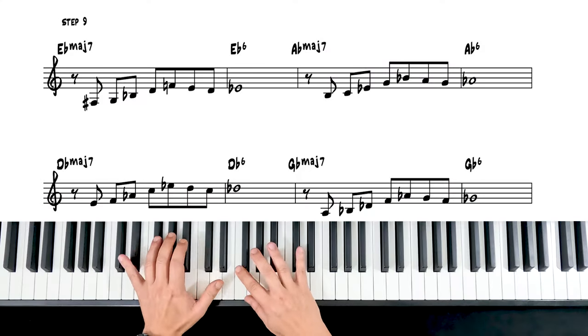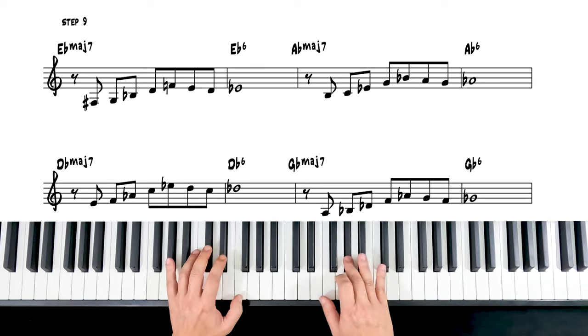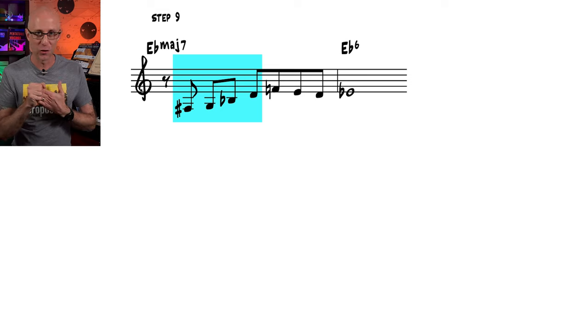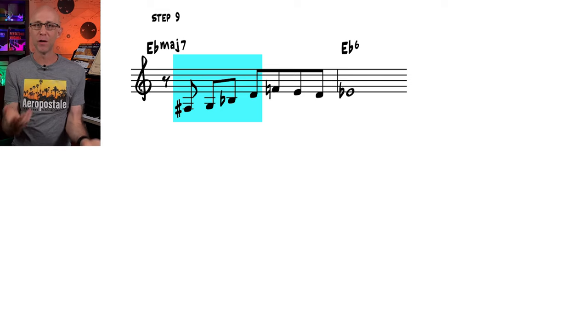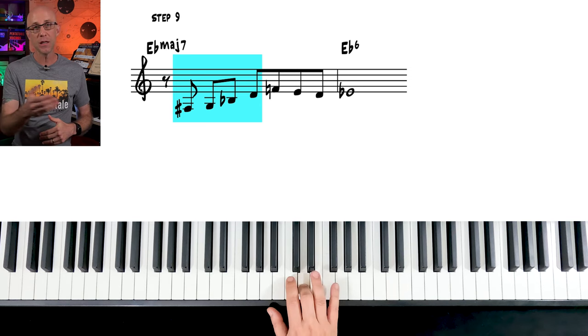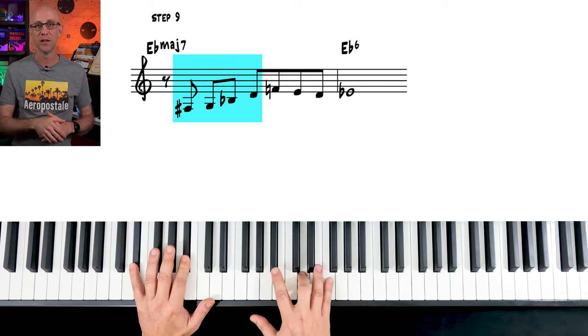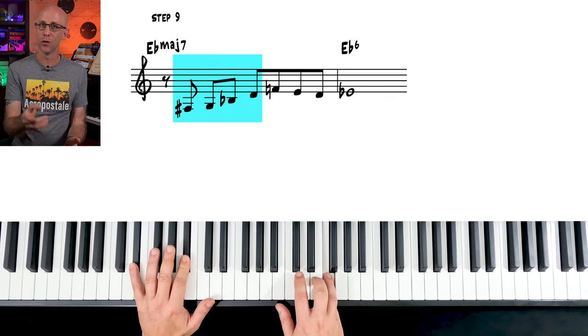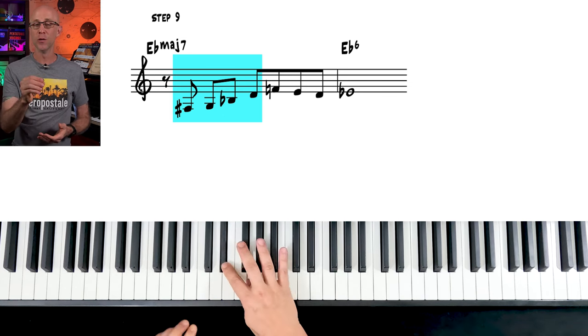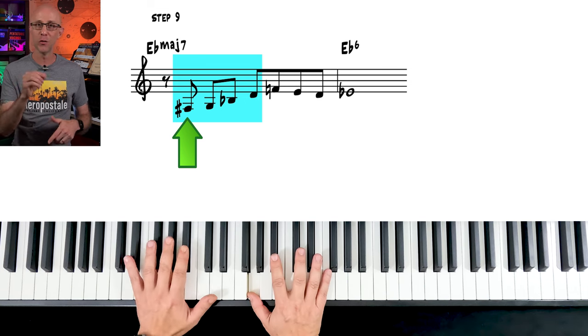Step 9. This time we're adding something before the double trap. This is just a simple arpeggio with a chromatic approach tone from below. So if we're on Ebmaj7, we would play Eb, G, Bb, D to arrive at the D where the double trap starts. But instead of playing the arpeggio from the root of the chord, we're replacing it with the chromatic tone below the third to approach it.